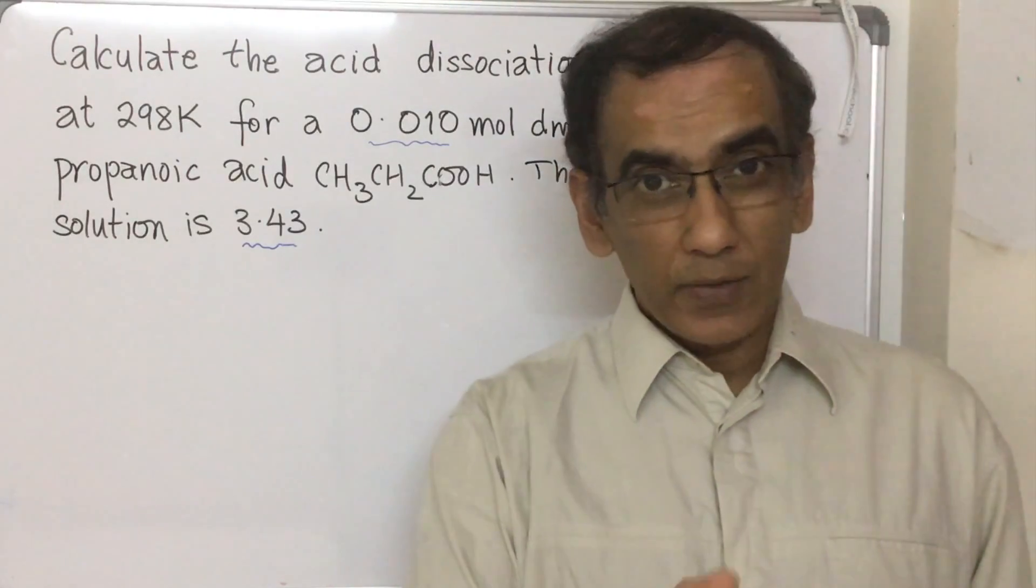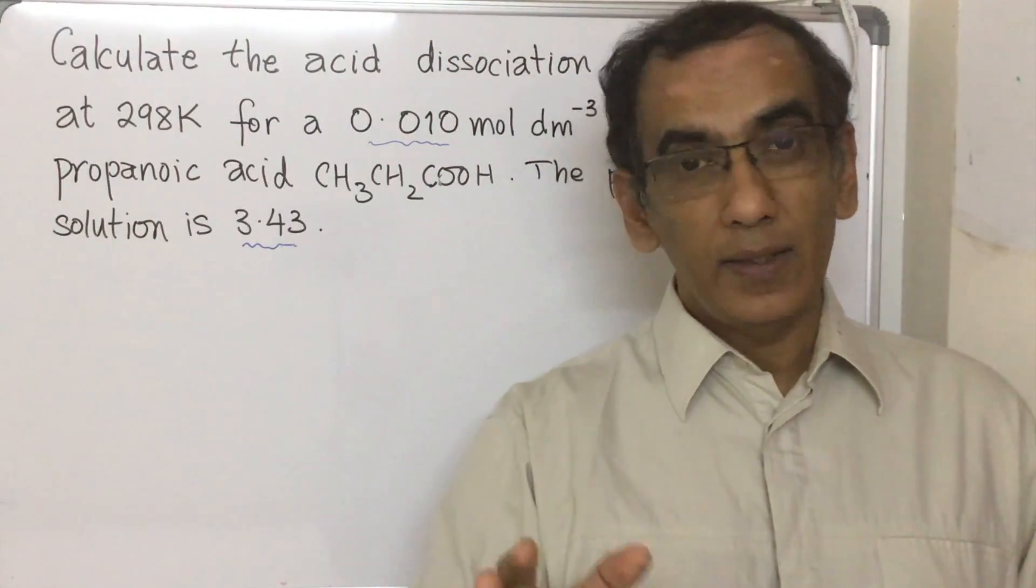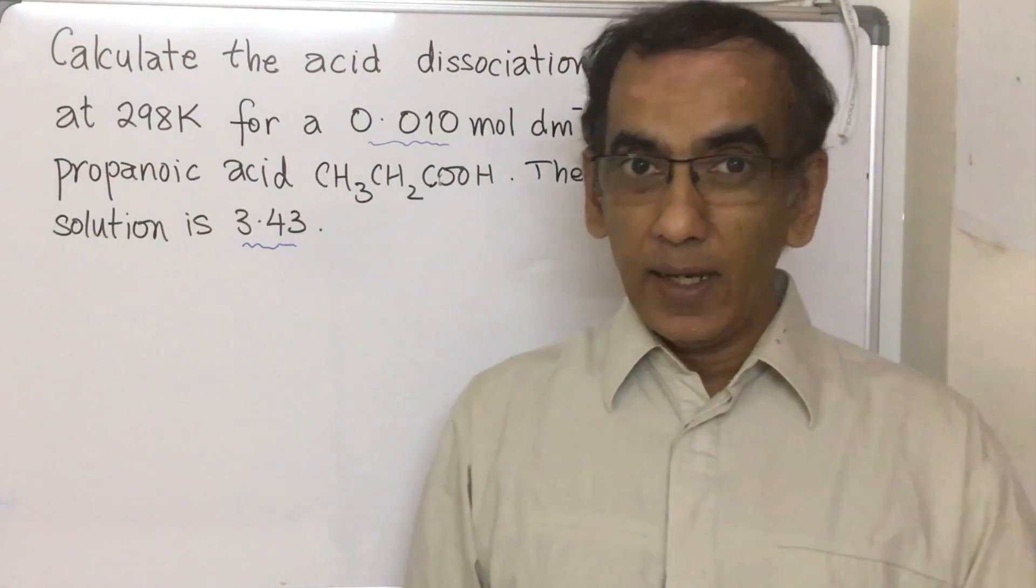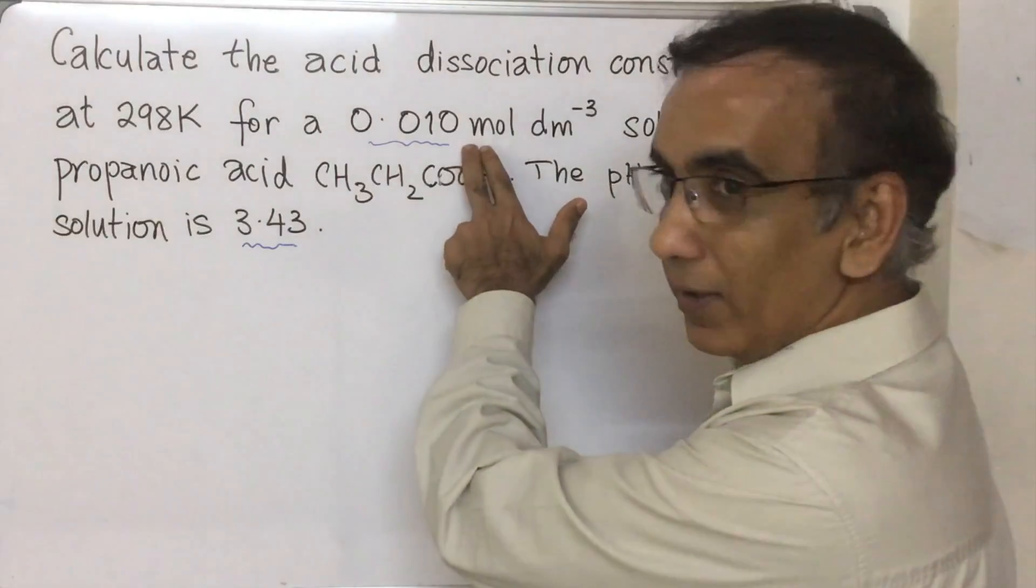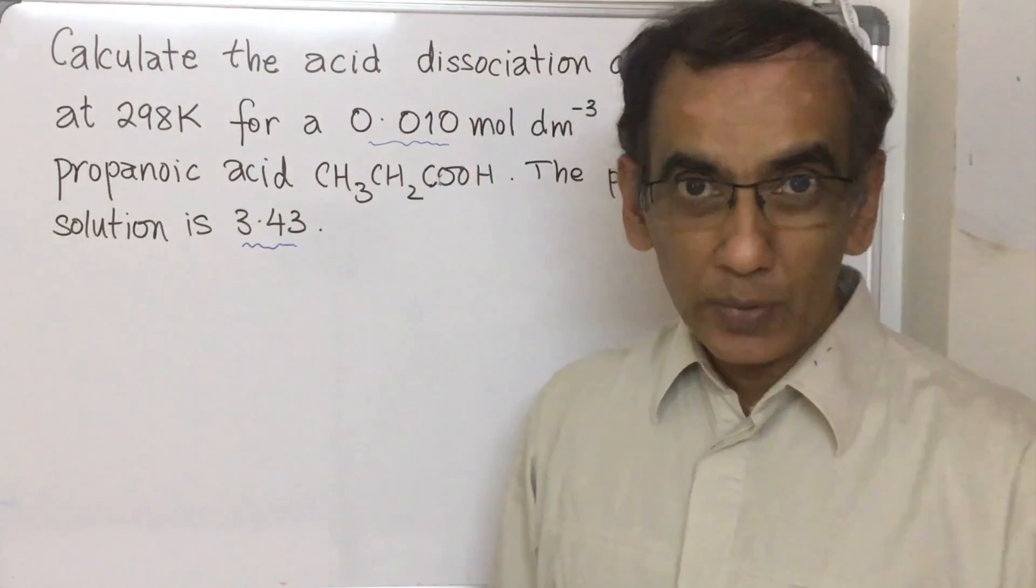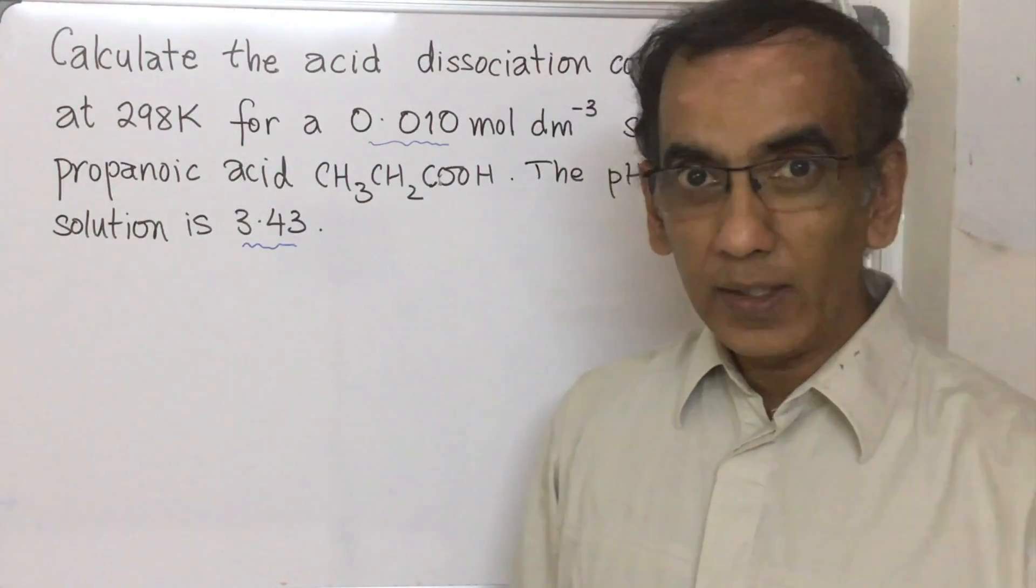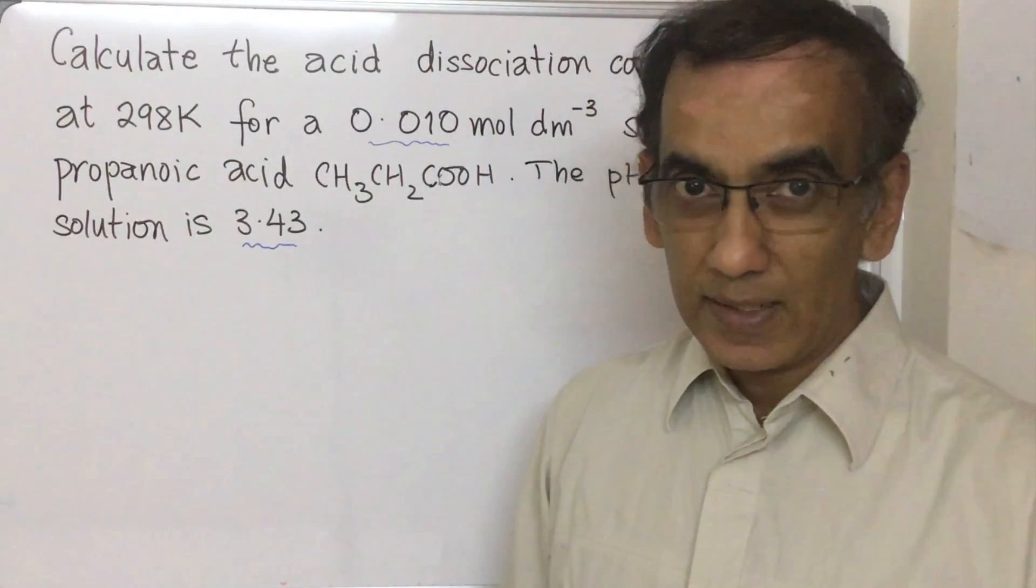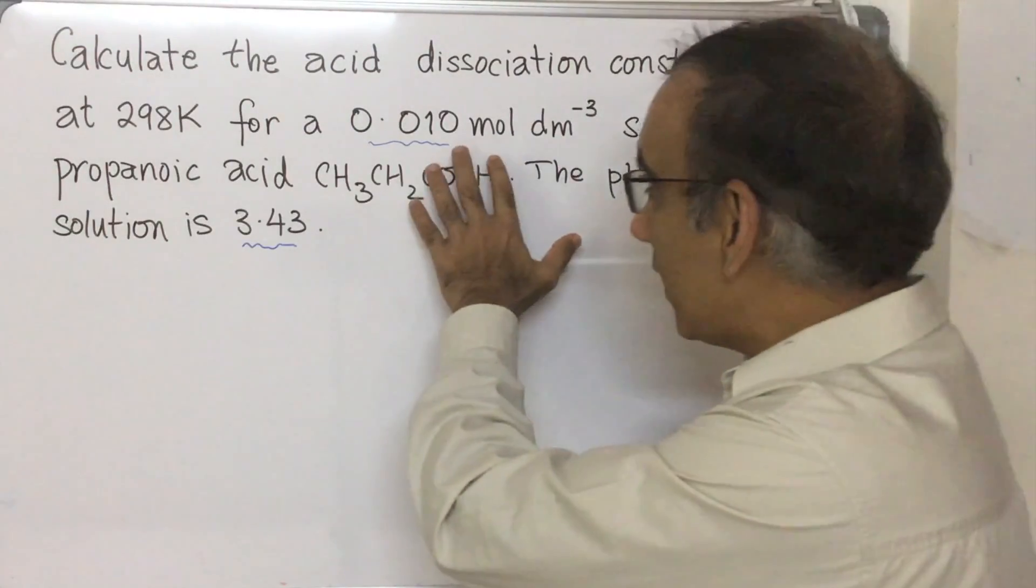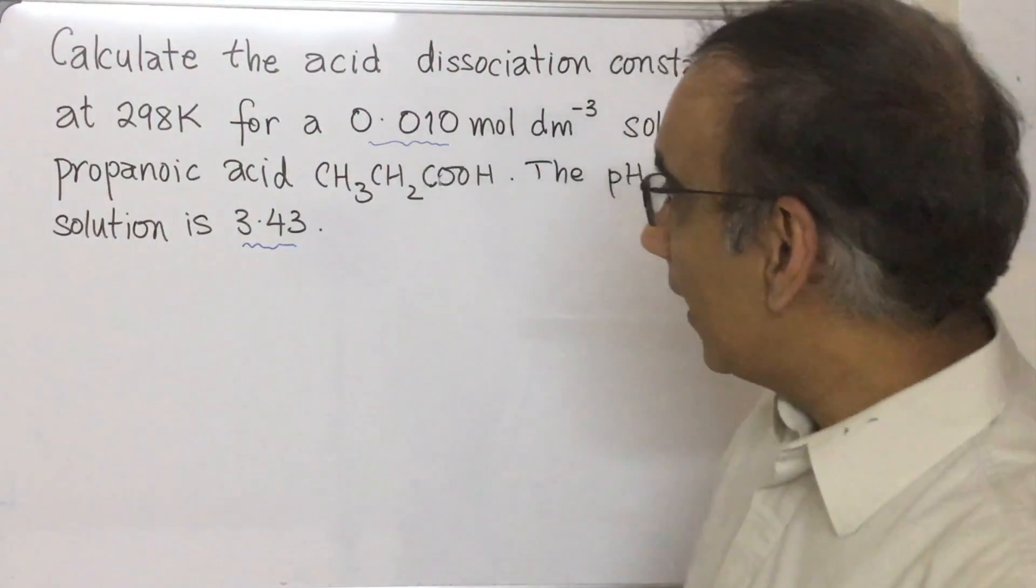If you have an acid like hydrochloric acid or nitric acid HNO₃, these are strong acids. When you are given the concentration of a strong acid, a monoprotic acid like nitric and hydrochloric acids, then it's a simple equation. You simply take the concentration and you find the negative log to the base 10 of that molar hydrogen ion concentration.